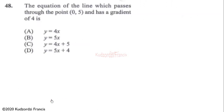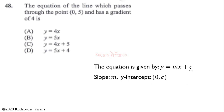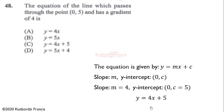Question 48: find the equation of the line passing through the point (0, 5) with a gradient of 4. A straight line in slope-intercept form is y = mx + c, where m is the gradient and c is the y-intercept. Substituting m = 4 and c = 5, we get y = 4x + 5.